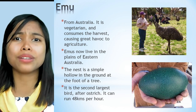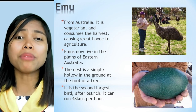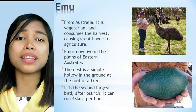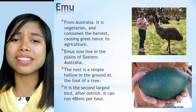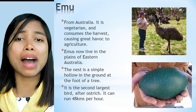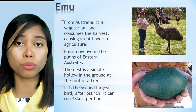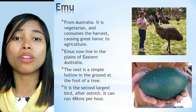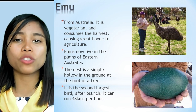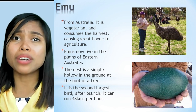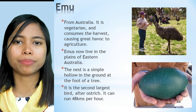The emu is an Australian bird. It is a vegetarian and consumes harvests, causing great havoc to agriculture. Emus now live in the plains of eastern Australia. Their nest is a simple hollow in the ground at the foot of a tree. The emu is the second largest bird after the ostrich and can run 48 kilometers per hour.